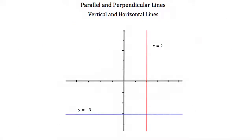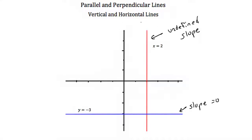There's a special case for perpendicular lines where you cannot take the negative reciprocal, and that is with vertical and horizontal lines. A horizontal line has a slope of 0 and a vertical line has an undefined slope, so you can't say their slopes are negative reciprocals of each other — that wouldn't make sense. You just have to memorize that if you ever see a vertical and a horizontal line, they are perpendicular and form a perfect 90-degree angle.